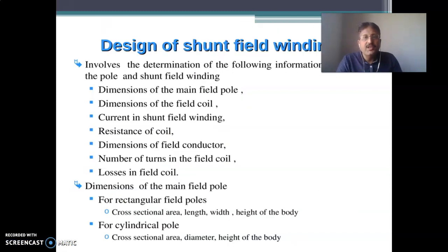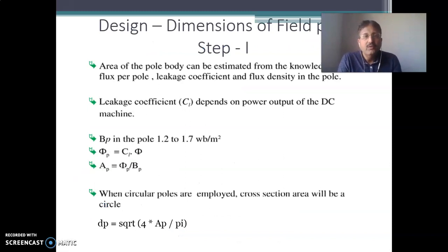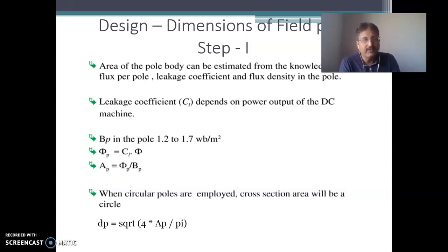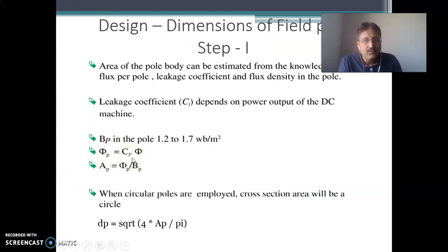The first step is the design of the field pole — finding the dimensions. To find out the area of the pole body, you need to find out the flux required in the DC machine. The working flux is determined from the voltage required, power output, and torque output. Once the flux is decided, consider the leakage coefficient and find out the flux per pole: phi_p = leakage coefficient × flux. Then assume the flux density in the pole in the range of 1.2 to 1.7 Tesla.